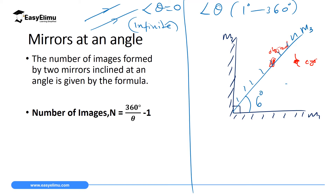You can vary the angle — change it to 60 degrees, place an object, and observe how many images are formed. Then change it further to 45 degrees and count again. A quick observation: as you decrease the angle from 90 to 45 degrees, the number of images increases. At 90 degrees there are very few images; at 60 degrees more images appear; at 45 degrees even more images are formed, and all of these can be counted.